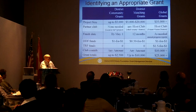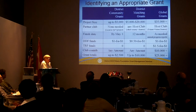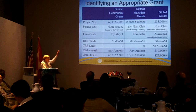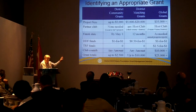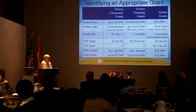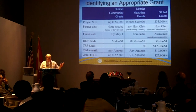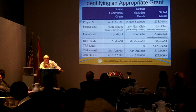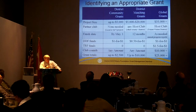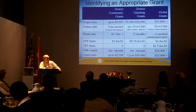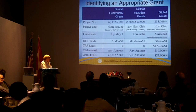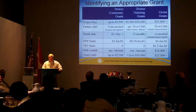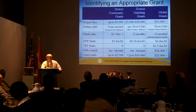Now let's talk about the different types of grants available to clubs in our district. The first is a district community grant. These are small projects — typically in our district they run from $1,000 up to $6,000 or $10,000 on the high end. It's a dollar-for-dollar match from club money up to a maximum of $2,500. It can be a local or international project, and it's a reimbursable grant. Because it's reimbursable, there's no need for the club to go through the Rotary Foundation qualification program for matching grants.